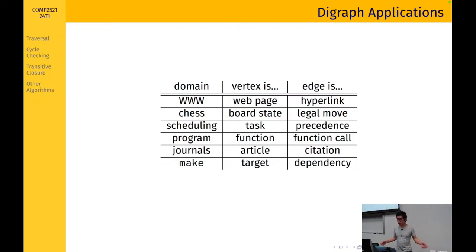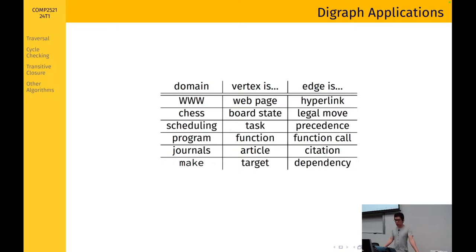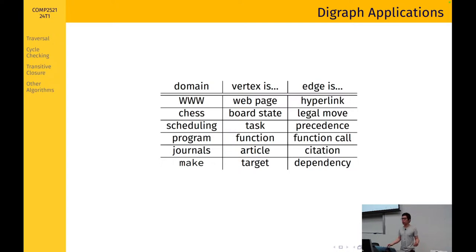We also saw a bunch of applications of directed graphs. For example, the internet is just a giant directed graph where vertices are web pages and edges represent links from one web page to another. Other applications include chess, where each vertex represents a board state and each edge represents a move between two states, and scheduling programs where vertices are functions, academic journals where vertices are articles and edges are citations, and Make where each target has a set of dependencies.